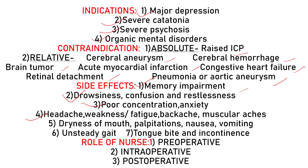Additional side effects of ECT include dryness of mouth, muscle pain, palpitations, nausea, vomiting, and unsteadiness — similar to what we see in an alcoholic patient. Tongue bite can occur during the seizure when the teeth clench together. Incontinence — the inability to control urine — can also occur.